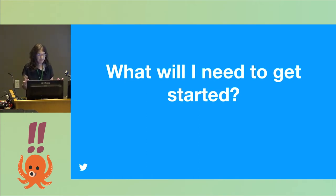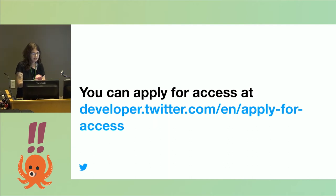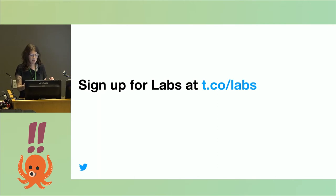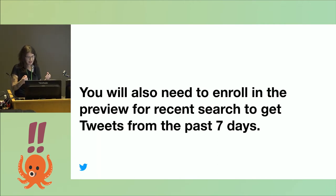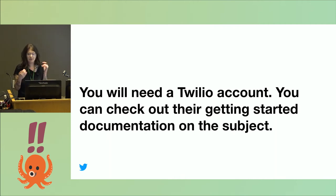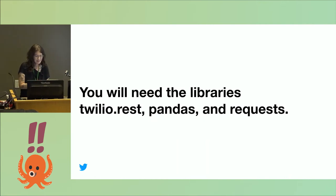If you want to build something like this, you'll need to create a Twitter app to connect to the API — you can apply for access at the provided address. The endpoint I'm showcasing uses one of our experimental endpoints called Twitter Developer Labs: Recent Search, which allows you to get tweets from the past seven days. You'll also need a Twilio account — Tilda is here with Twilio and they have great example code.